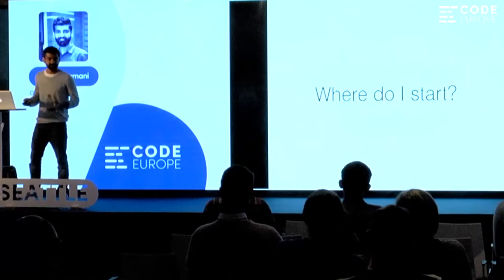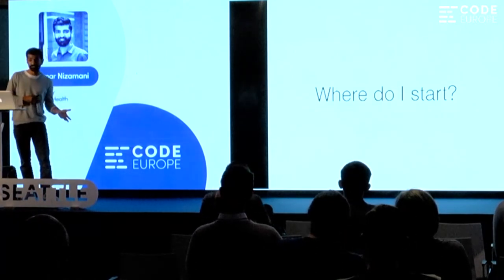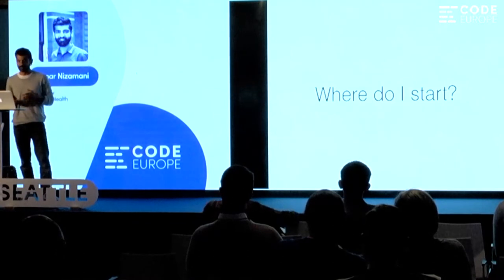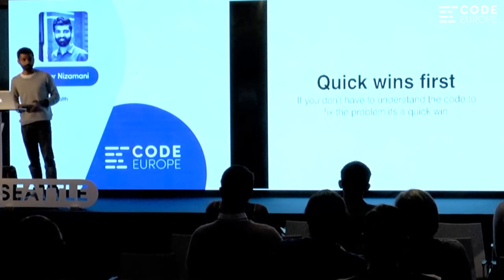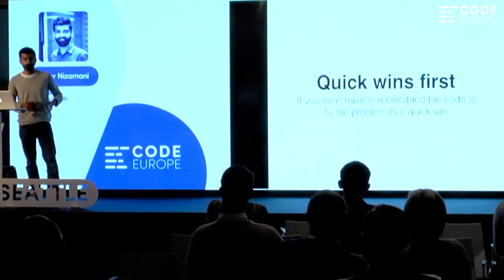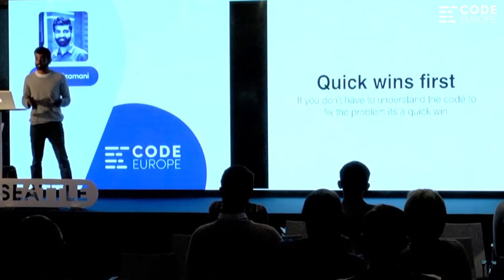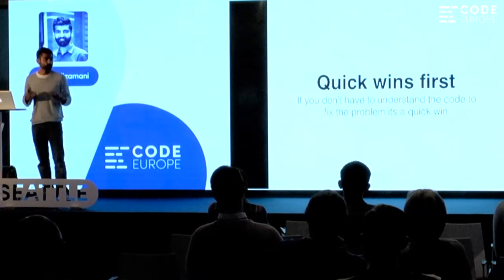When I joined, the first question I asked was, 'Where do I even begin? The application is crashing, the product owners aren't happy.' You need to figure out a strategy that's iterative and allows you to improve your product step-by-step. So the first thing I did was focus on quick wins first. Quick wins are fixes where you do not have to understand the code you're beginning to fix, because understanding code is one of the hardest problems.